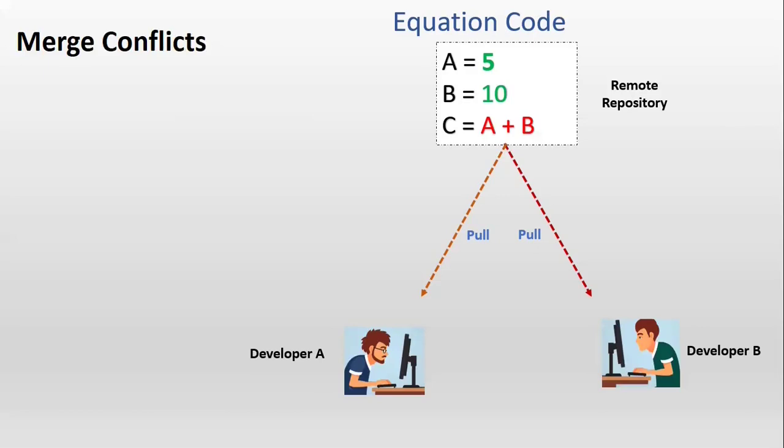Once after they cloned the source code from the remote repository to their local system, they created a local development branch from local master. And they started working on the new requirement in the local development branch. So during this development, they made changes to the existing Scala program file.